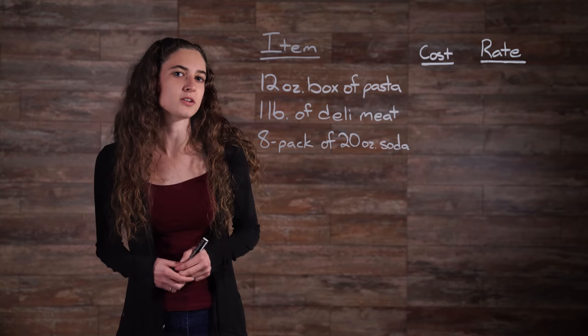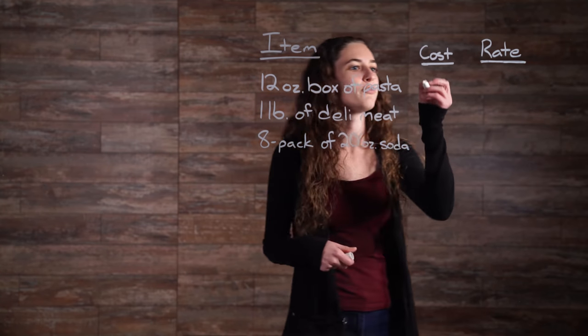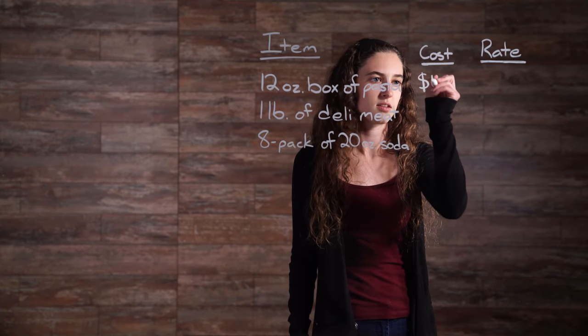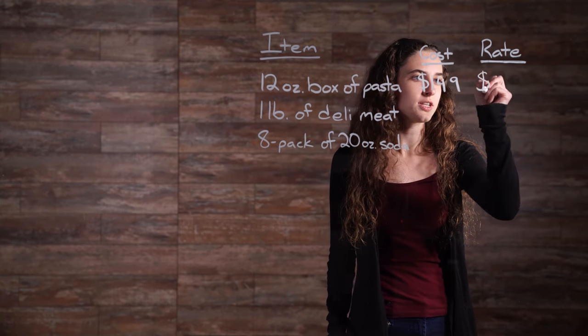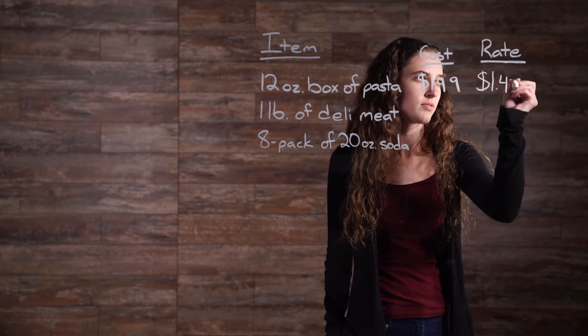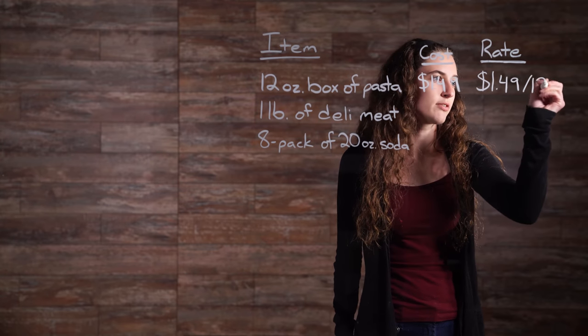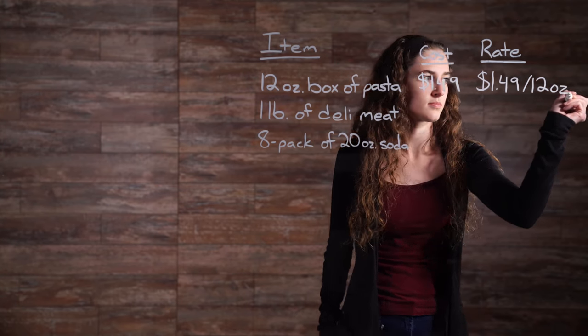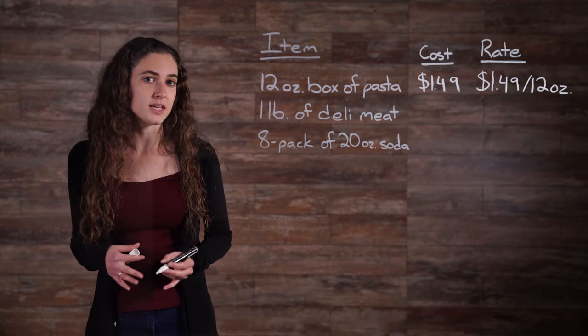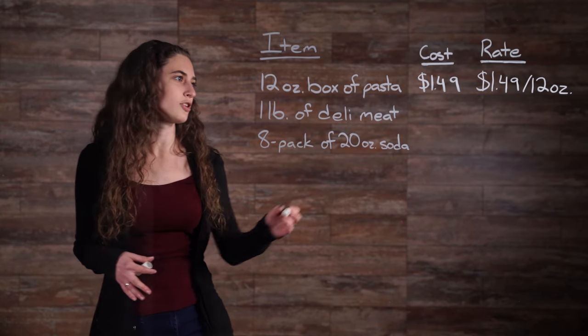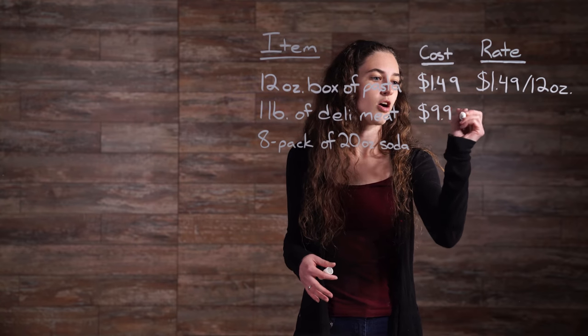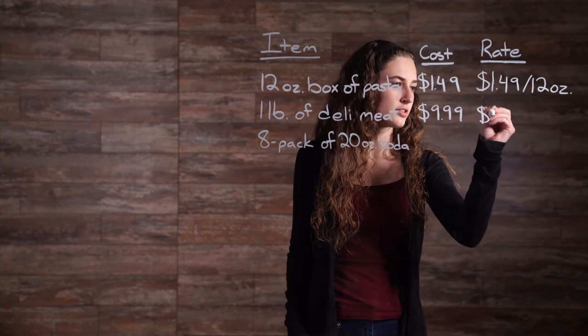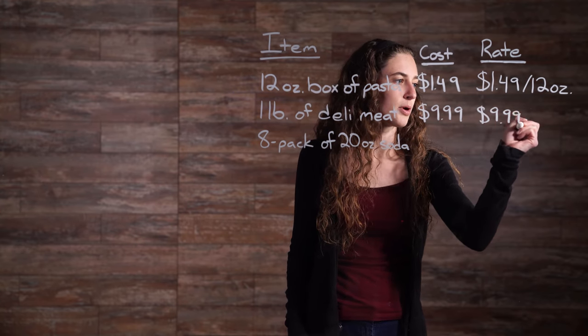Let's say we have a 12-ounce box of pasta which costs $1.49. The rate is then $1.49 per 12 ounces. If we have a pound of deli meat and the cost is $9.99, our rate would then be $9.99 per pound.